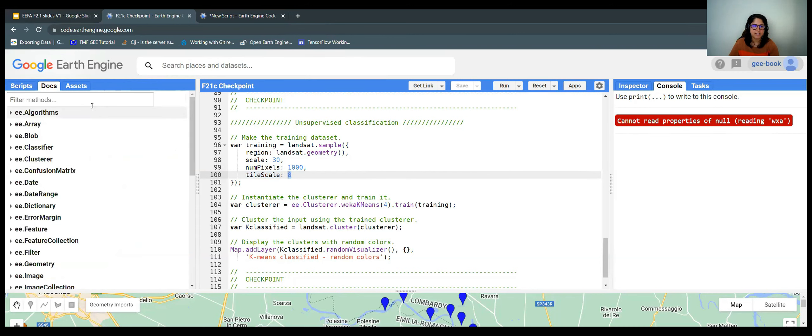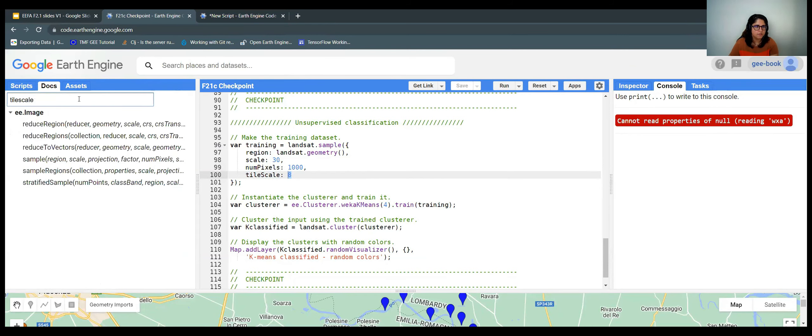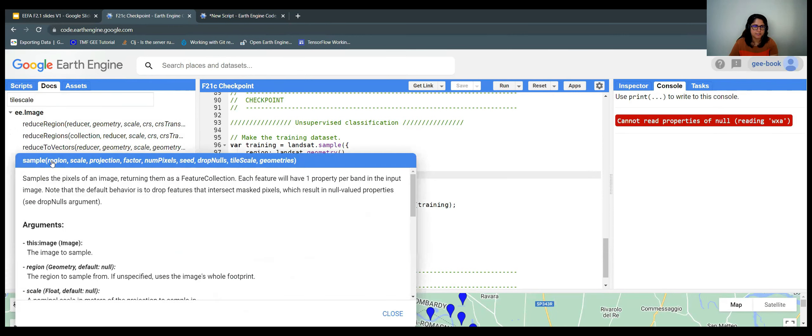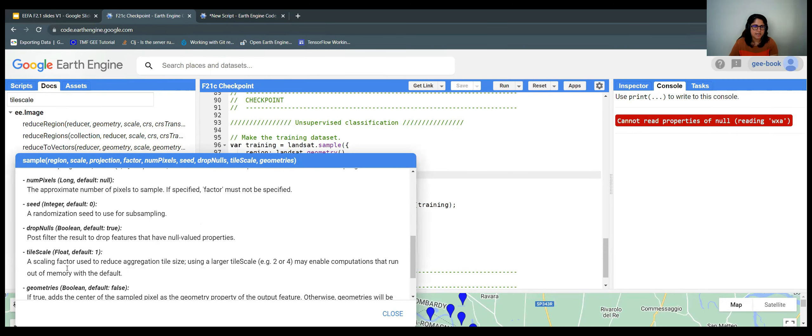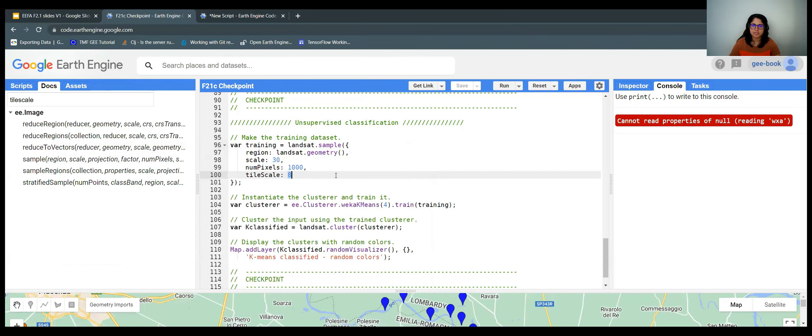This tile scale property is just how Earth Engine is doing the sampling so it doesn't run out of memory. I'm using a tile scale of eight. Tile scale is a scaling factor used to reduce aggregation tile size. This enables computations and prevents running out of memory. So you can use like two, four, eight, 16. I'm using eight here because I think it's sufficient.